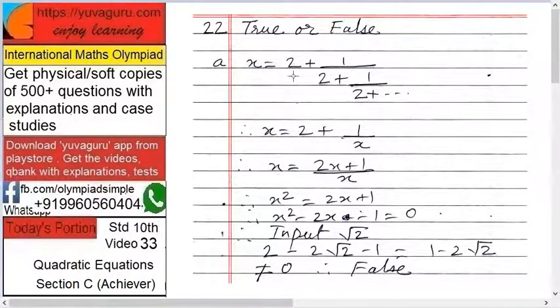Now, x equals 2 plus, see this. This whole term can be written as x again. So, x equals 2 plus 1 upon x. So, solve this. 2x plus 1 upon x, then x square equals 2x plus 1. Therefore, x square minus 2x minus 1 equals 0.